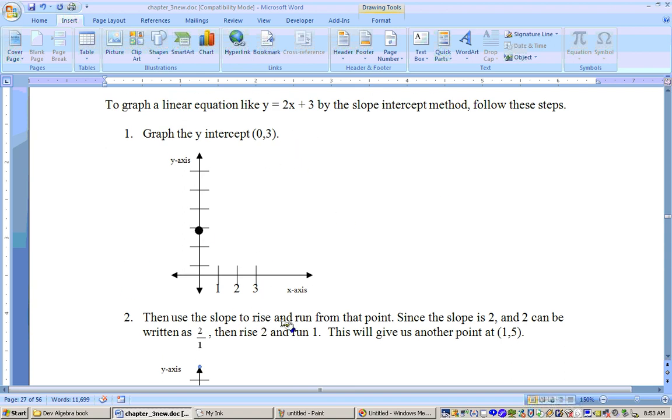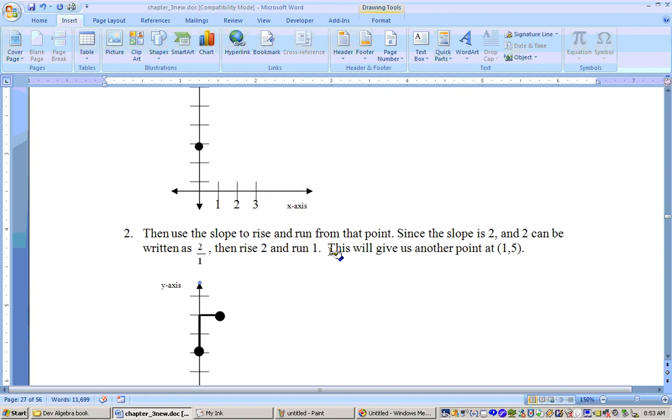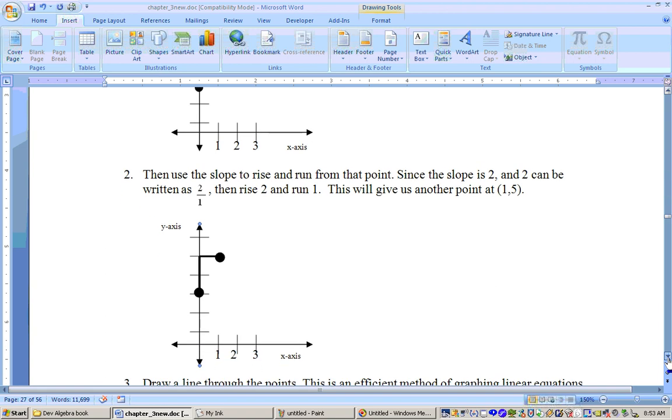Then we use the slope to say how much we rise and run. Well, the slope is 2. If that's not a fraction right in the form of a fraction, 2 is the same as 2 over 1. That means from that Y-intercept, from right here at 3, right here at 3 units high, we're going to rise 2,